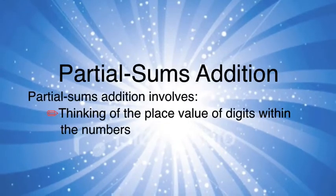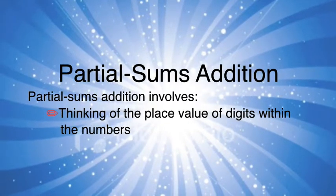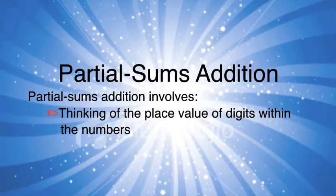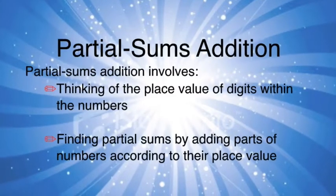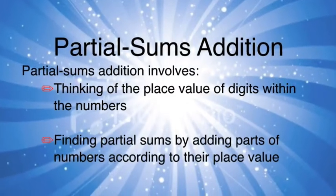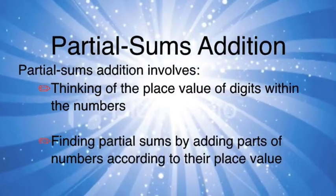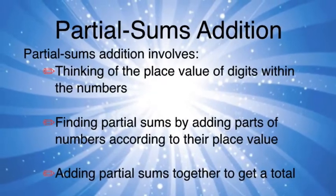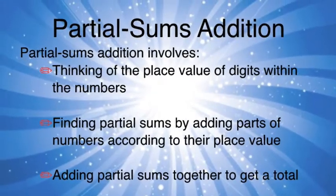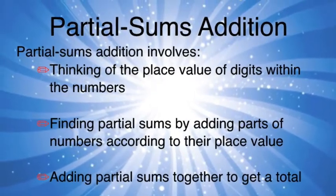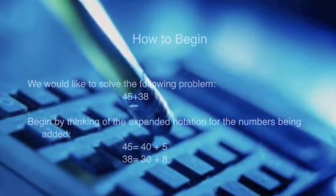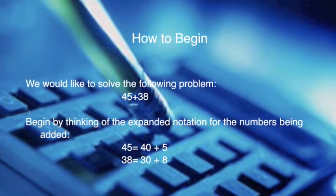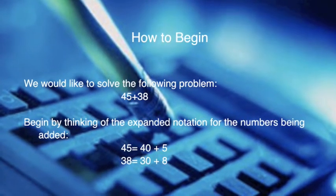The Partial Sums method involves thinking of the place value of digits within the numbers, finding partial sums by adding parts of numbers according to their place value, and adding those partial sums together to get a total. Now let's begin learning this great addition algorithm.